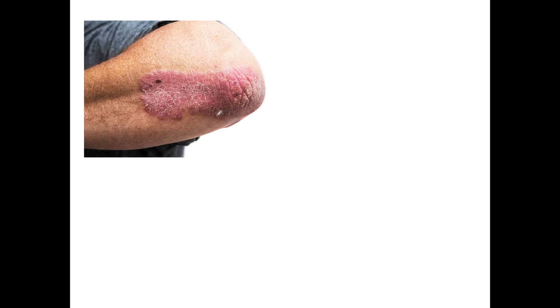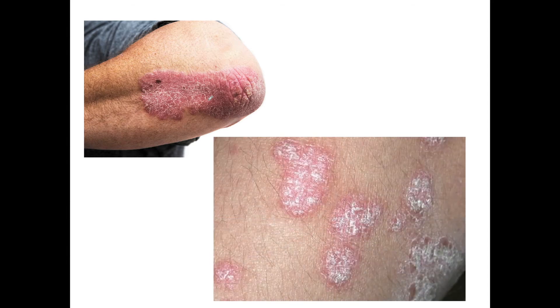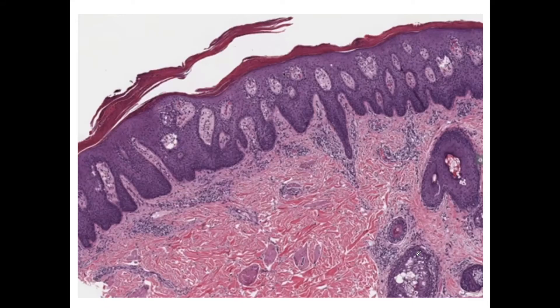This is a clinical presentation of a psoriatic lesion where we can see a large erythematous psoriatic lesion with presence of white scales. This is another picture showing multiple psoriatic lesions with these scaly silvery scales. These lesions are very itchy.